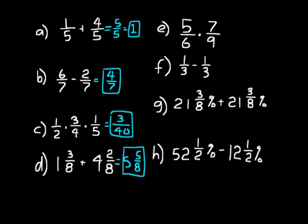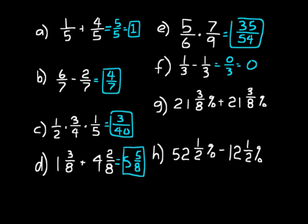On E, five-sixths times seven-ninths: multiply the numerators — five times seven is thirty-five. Multiply the denominators — six times nine is fifty-four. The answer is thirty-five over fifty-four. On F, one-third minus one-third: subtract the numerators and you get zero over three. Any time you have zero in the numerator, the answer is zero — just write it as zero.